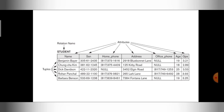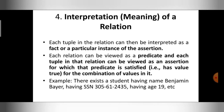In simple words, each tuple represents a fact. For example, looking at the first row, you can understand the fact that there exists a student by the name Benjamin Bayer with SSN 305612435, home phone 8173731616, age 19, and a certain GPA. Each record tells something about a particular entity — it is a fact. If you have any doubts, please post them in the comment section. Thank you for watching.